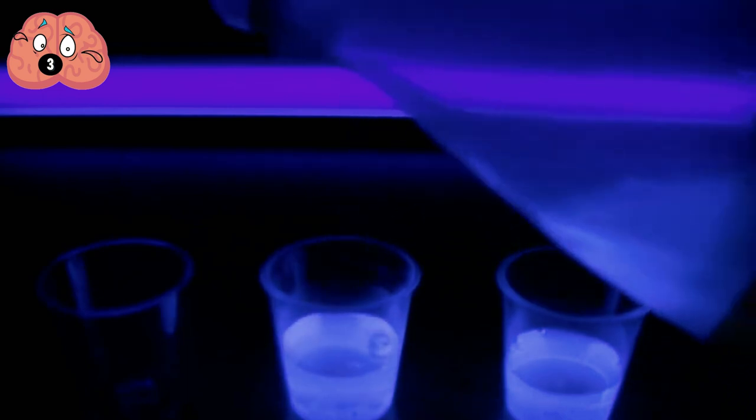Put the tonic water into the container and then simply go into the dark room. Turn on the ultraviolet light, direct it to the container, and voila! Who would have thought you've created glow in the dark water? Now this one's pretty simple to do, but the science behind it is quite impressive.